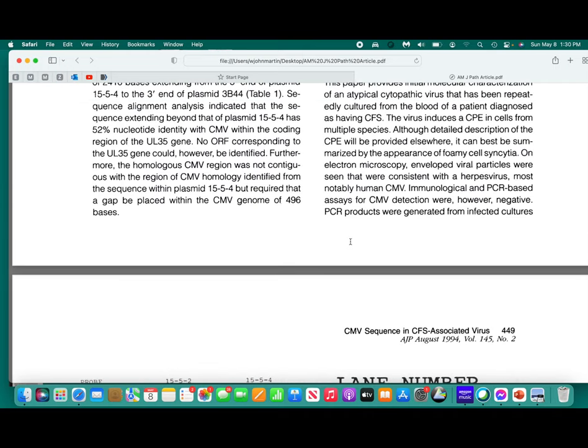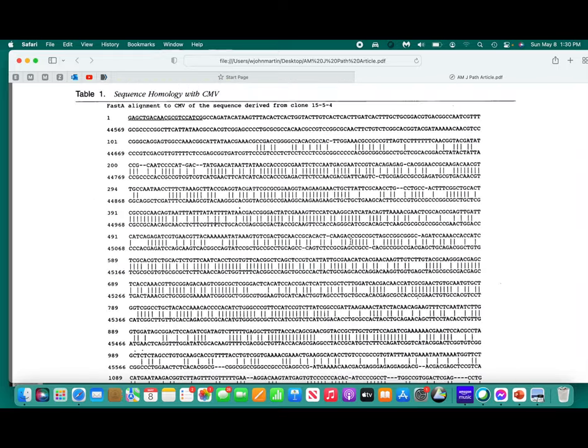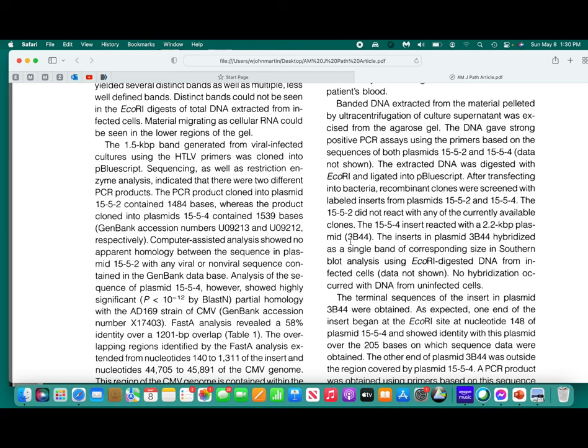The real bottom line of the study, though, is to go back and see what comprises the virus. I mentioned that there were two products around this 1,500 or 1.5 kilobase pairs that were generated by the PCR. One of the products, cloned into plasmid 1552, contained 1,484 bases. The other, cloned into 1554 plasmid, contained slightly more, 1,539 bases. Then the issue was having sequenced it, submit the sequence to Genbank.